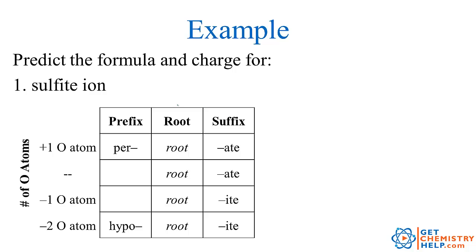Let's practice a few of these. What's the sulfite ion? Looking for -ite. Sulfate, if you have your PDF or remember, is in that center box so four oxygens, and in the second column so two negative. Sulfate is SO4 2-negative. Sulfite would have one less oxygen, so it must be SO3 2-negative.